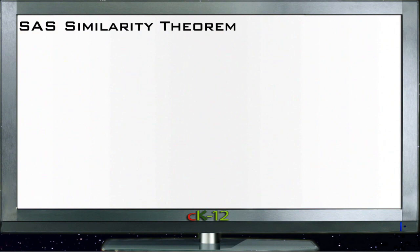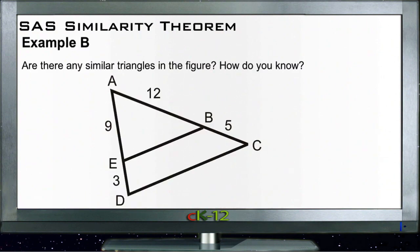All right, take a look at Example B. Example B says, are there any similar triangles in the figure and how do we know? Well, if we can figure side-angle-side, we could tell that there were similar triangles. So here we have the short side—well I guess it's probably the medium side—of triangle AEB is 9 units, and then the long one AED, let's do the long triangle things in red, AED then would be 9 plus 3, or 12 units, right?